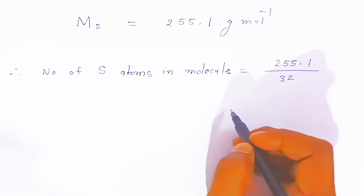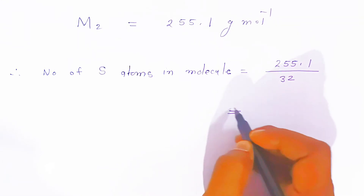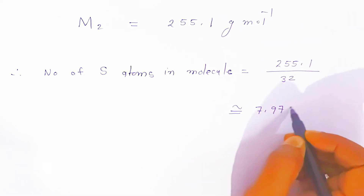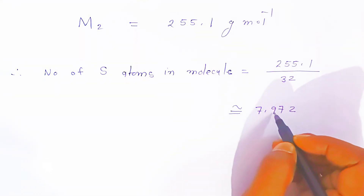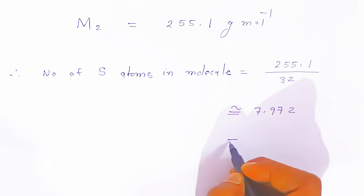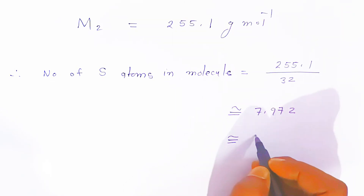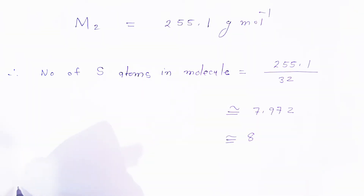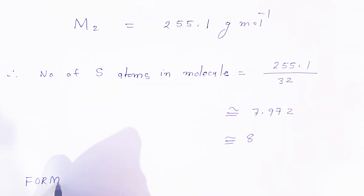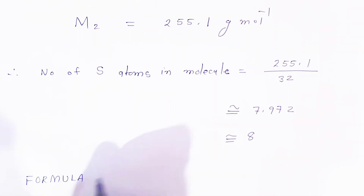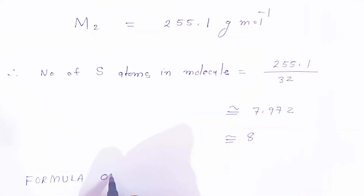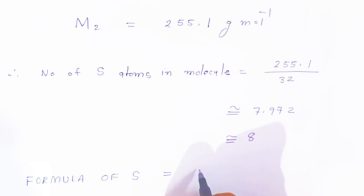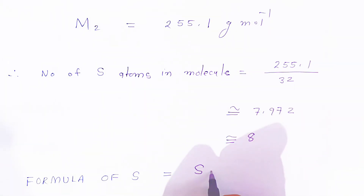When we divide 255.1 by 32, we get approximately 7.97, which is very close to 8. So we round it to 8. Therefore, the molecular formula of sulfur in this solution is S₈.